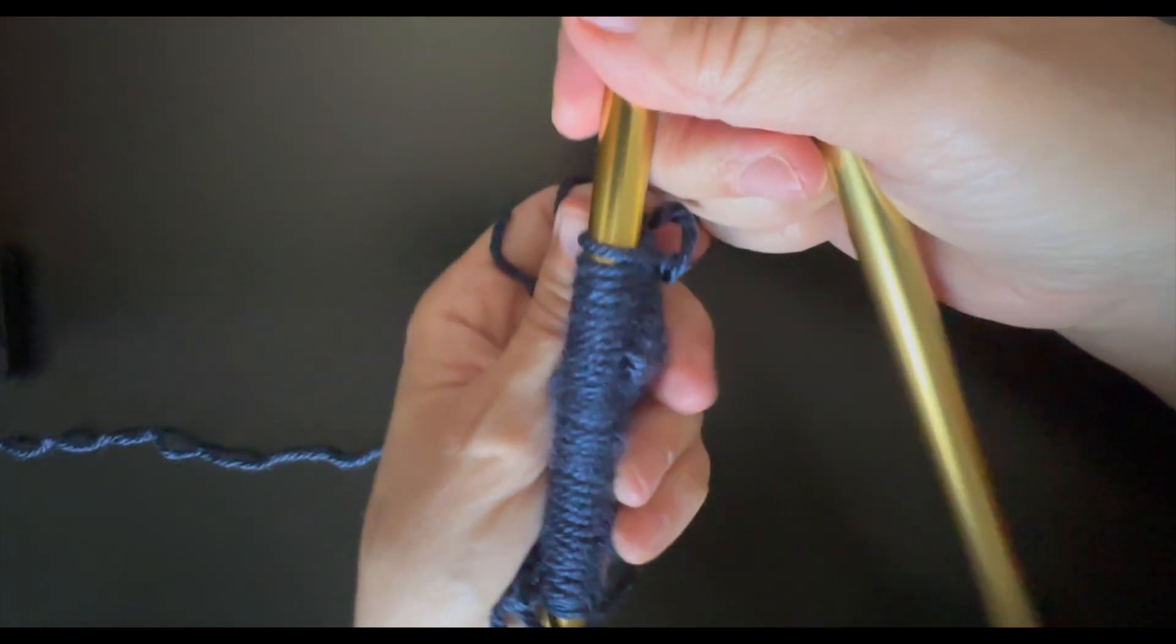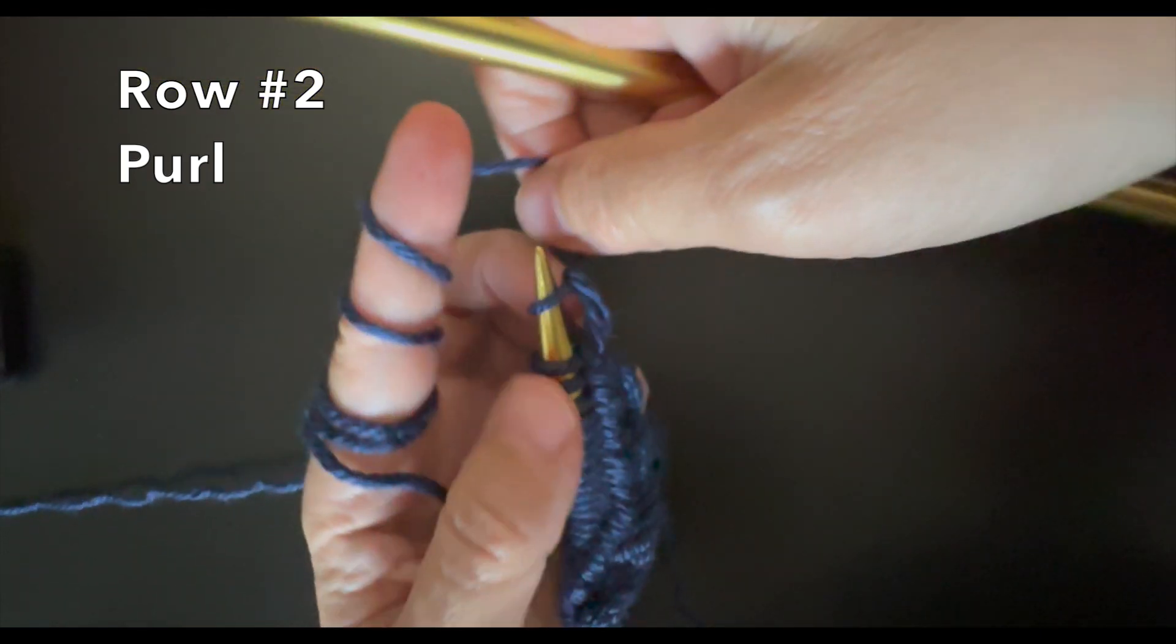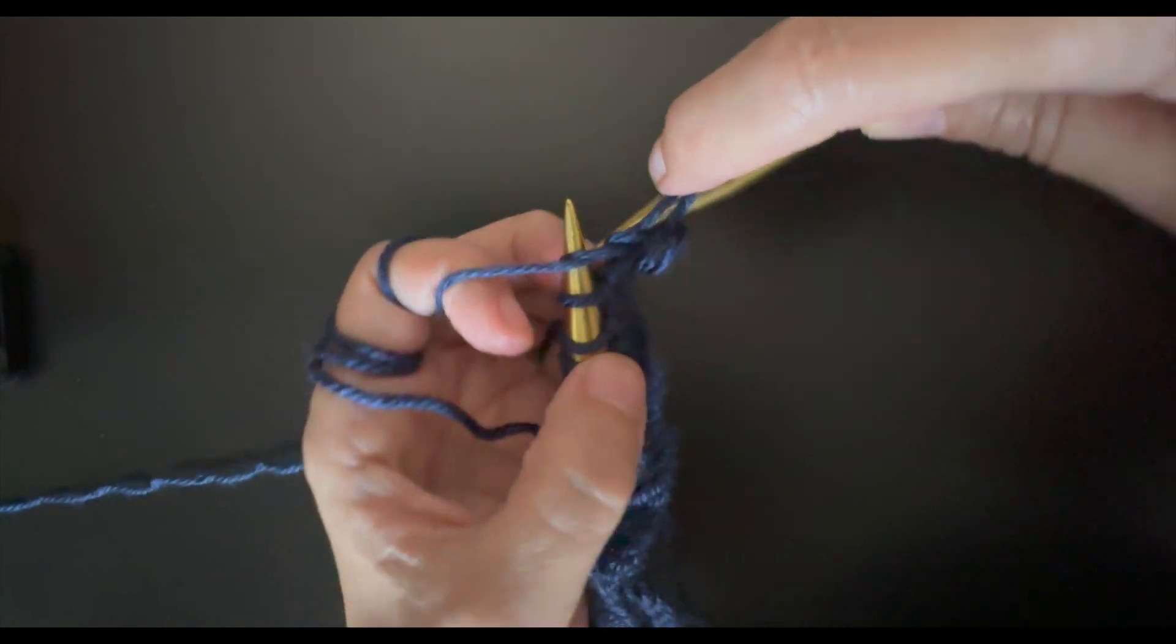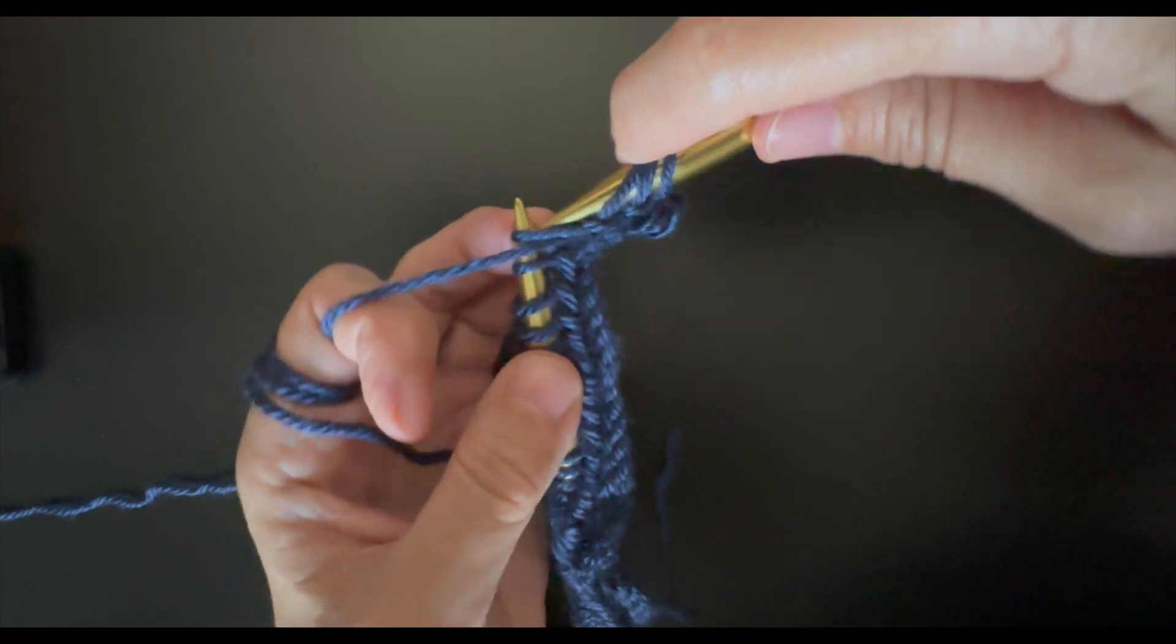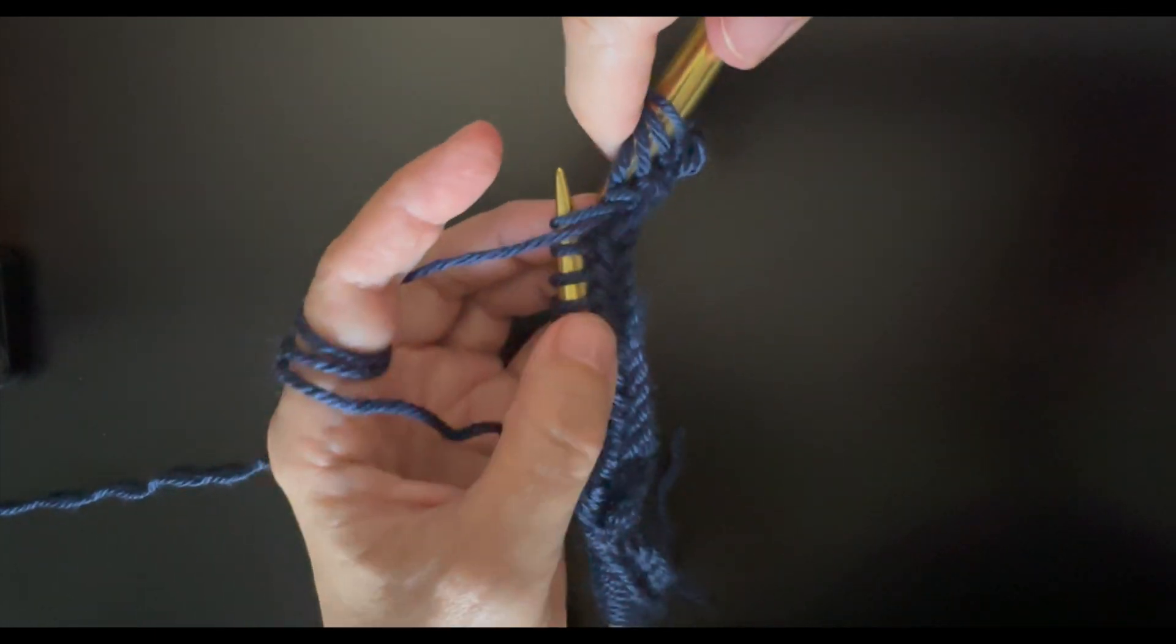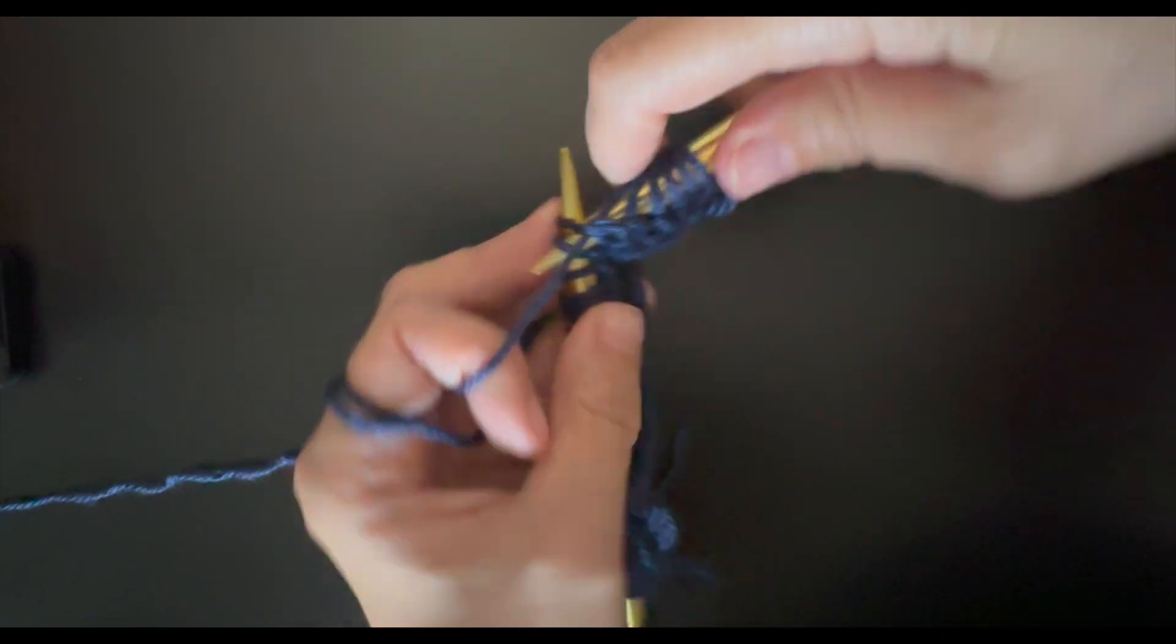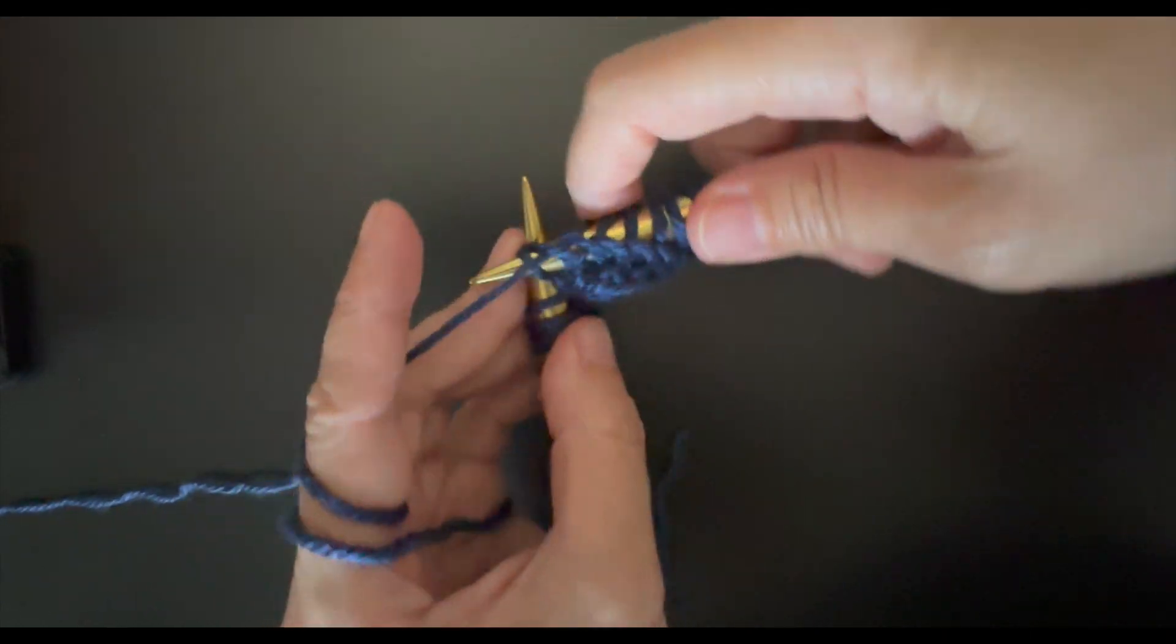So now we just did our first row. I turn the work and I'm going to start with row number two. This is going to be the wrong side and we are going to continue doing the same. First stitch we pass, and now the two next loops I'm going to do a purl. Again, next two loops a purl, but I'm going to drop the first loop. We are going to continue knitting purl in the wrong side, two by two and dropping one loop.